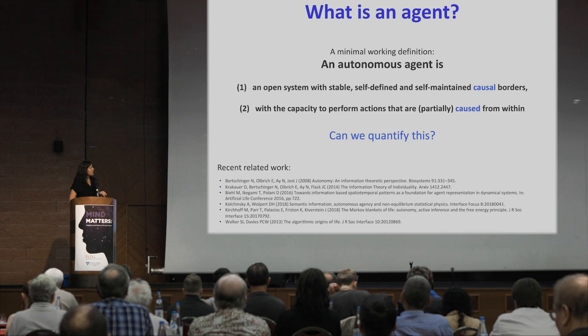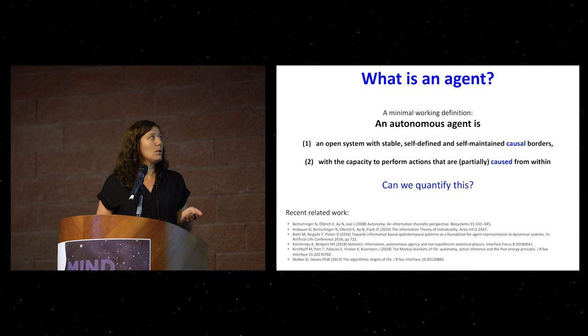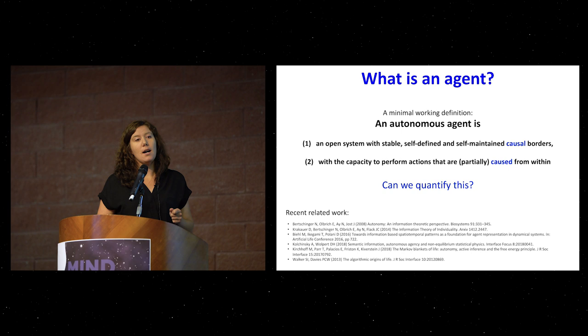Here I want to give a minimal working definition of what an autonomous agent is. It's twofold. One, it needs to be an open system with stable, self-defined and self-maintained causal borders. And two, it has to have the capacity to perform actions that are at least partially caused from within. The question is: can we quantify this in any way? There has been a lot of recent work about this, and many of the people here are interested in this kind of topic.